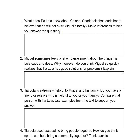We already talked about this on the graphic organizer where we made inferences. Tia Lola knows that the colonel played baseball when he was a young man, so she knows that he really enjoys baseball — it's close to his heart. She thinks that if she names the team after him and makes their uniforms the same color she painted the house, he won't evict them and will let them keep the color of their house.